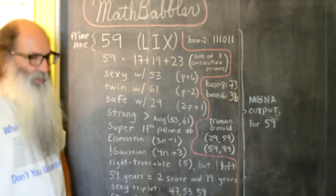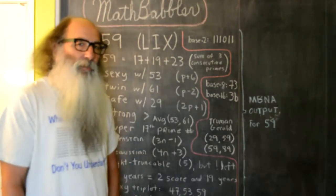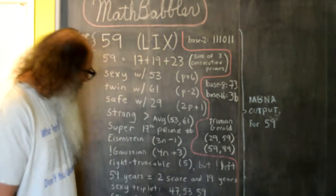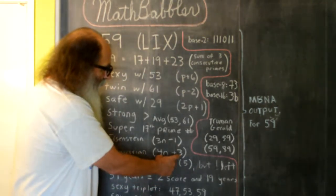So I've got the not sign in front of the word Gaussian right there, and I'm going to have to fix the math babbler number analyst for that. But nonetheless, 59 does follow this form right here.